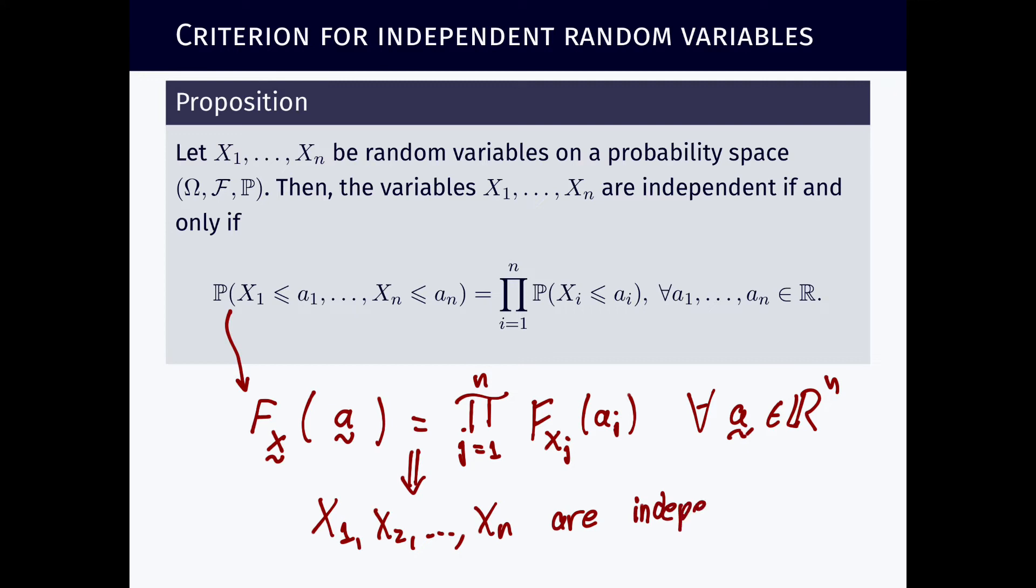And this proposition, I like this proposition very much. Of course, this direction is pretty obvious. This direction simply uses the property of independence by taking Xi belongs to Ai, where Ai equals minus infinity to ai. So there's no mystery here.